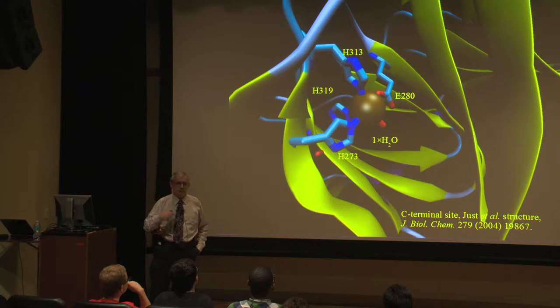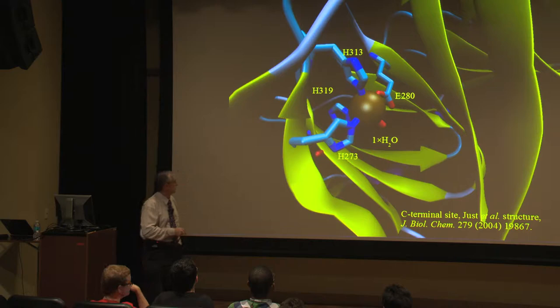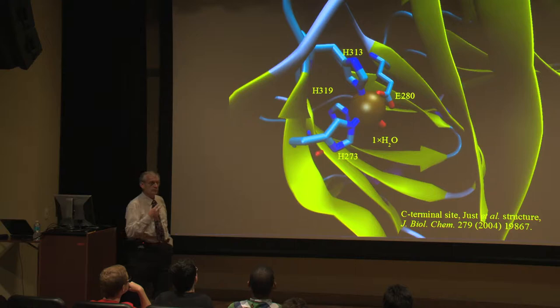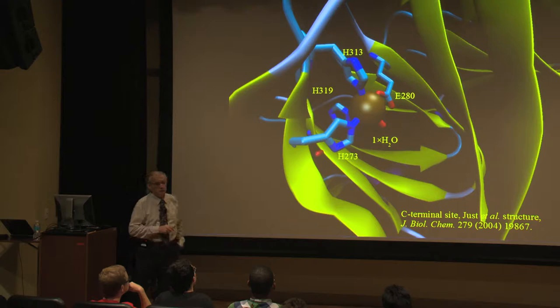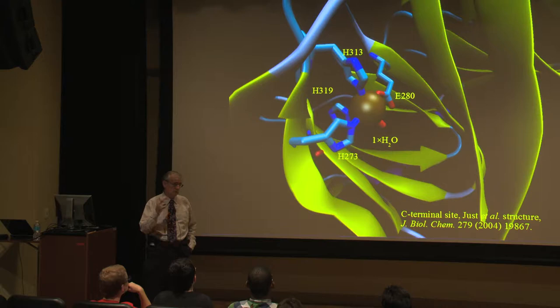Now there's a second crystal structure. By a lucky stroke, it looks different than the first. Let's start with the C-terminal site that people think is not the active site. Again, three histidines and glutamate, but only one water molecule ligated. This is a different ligand environment - five instead of six ligands. That should change the spectrum of that manganese as far as EPR is concerned.